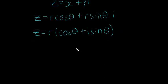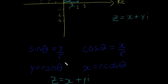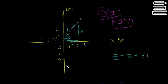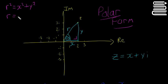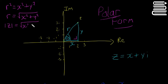Now, to calculate r and θ: looking at the right-angle triangle, by Pythagoras, r² = x² + y², so r = √(x² + y²). This is also the modulus of the complex number — we might have called it √(a² + b²) in previous videos, but it's the same idea.